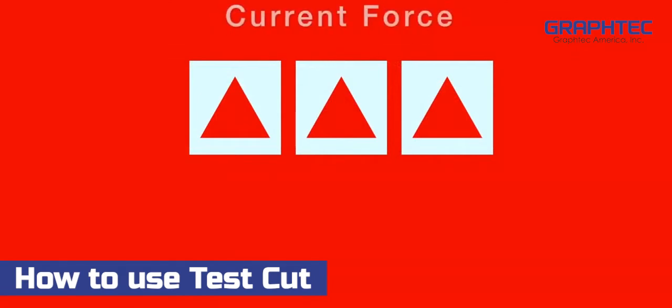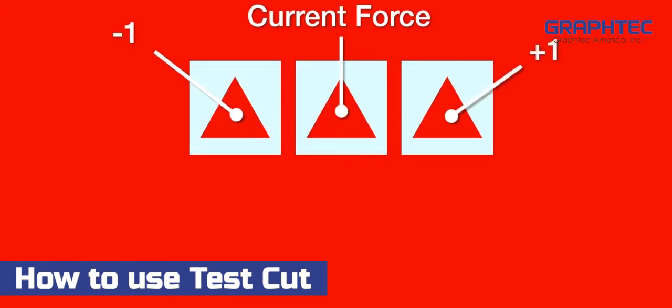The middle pattern is cut at the current force. The pattern to the left is cut with the current force minus 1, and the pattern to the right is cut at the current force plus 1.